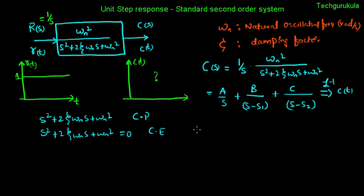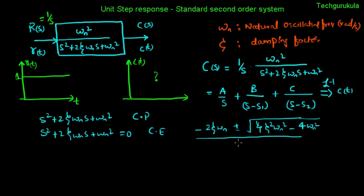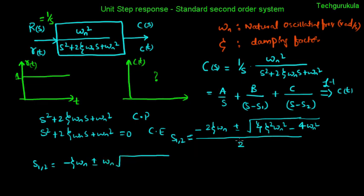Using the quadratic formula (minus b plus or minus square root of b squared minus 4ac, divided by 2a) on the characteristic equation, the roots s1,2 are given by: minus 2 zeta omega_n plus or minus square root of (4 zeta squared omega_n squared minus 4 omega_n squared), all divided by 2. Simplifying, s1,2 = minus zeta omega_n plus or minus omega_n times square root of (zeta squared minus 1).